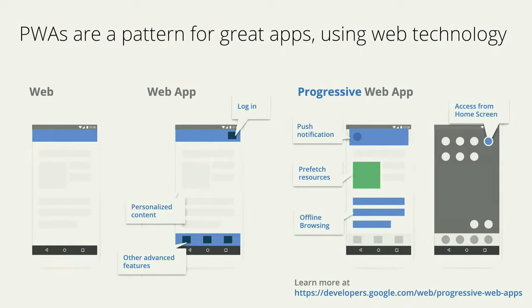Fortunately, there's a pattern for building experiences that meet this bar: Progressive Web Apps. PWAs are a pattern for building great apps using web technology. They have all the features and functionality users expect from a modern application — including personalized content, an offline mode, push notifications, and instant loading. PWAs and installed web apps go hand in hand: you basically need a PWA in order to unlock install.